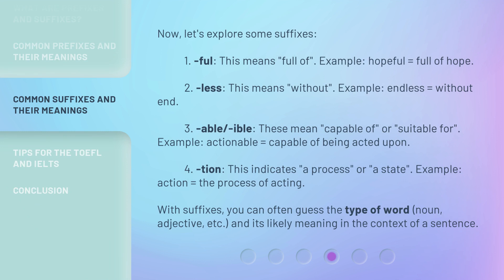Now let's explore some suffixes. 1. -ful — this means 'full of'. Example: 'hopeful' equals 'full of hope'. 2. -less — this means 'without'. Example: 'endless' equals 'without end'. 3. -able / -ible — these mean 'capable of' or 'suitable for'. Example: 'actionable' equals 'capable of being acted upon'. 4. -tion — this indicates a process or a state. Example: 'action' equals 'the process of acting'. With suffixes, you can often guess the type of word — noun, adjective, etc. — and its likely meaning in the context of a sentence.